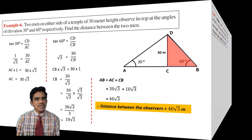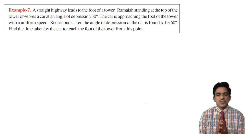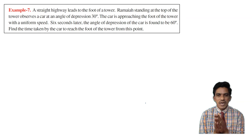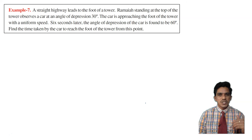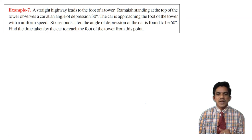Let us look at Example 7. A straight highway leads to the foot of a tower. Ramaya standing at the top of the tower observes a car at an angle of depression 30 degrees. The car is approaching the foot of the tower with uniform speed. Six seconds later the angle of depression of the car is found to be 60 degrees. Find the time taken by the car to reach the foot of the tower from this point.